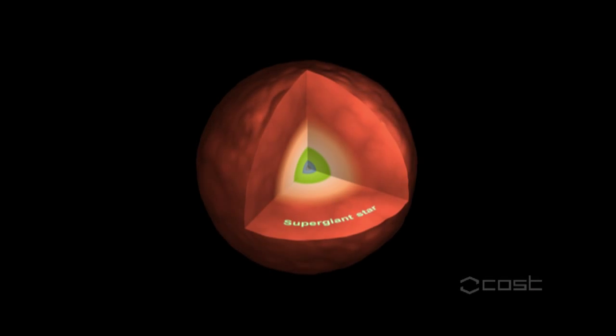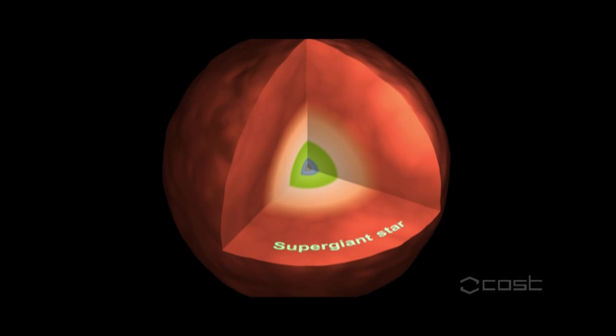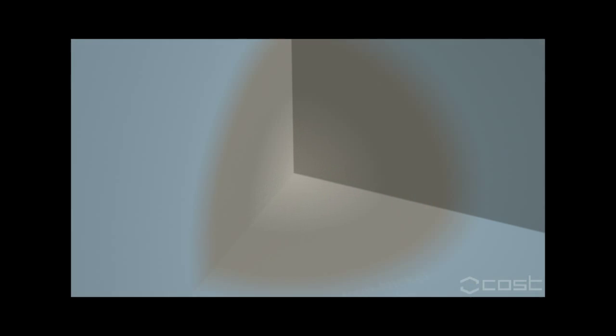If the initial mass of a star is larger than about 20 solar masses and its energy resources from nuclear fusion are exhausted, the core of the star suddenly collapses in a fraction of a second.